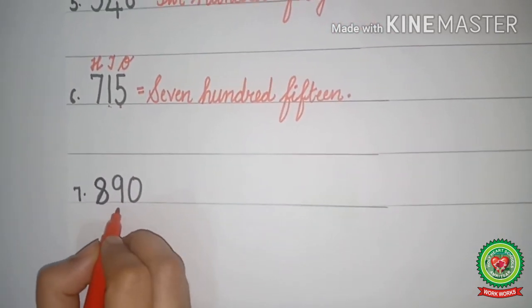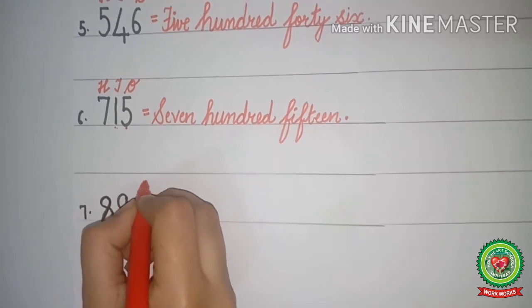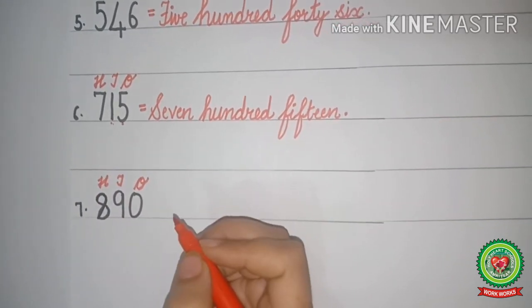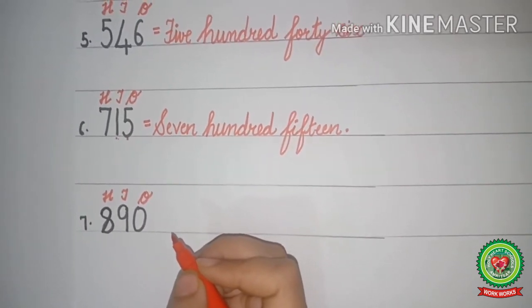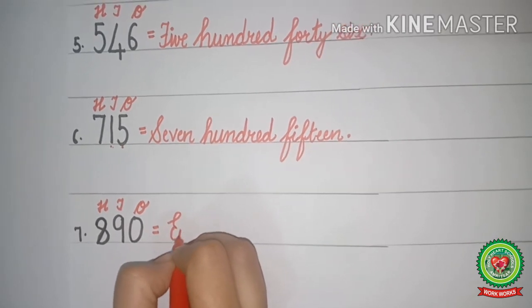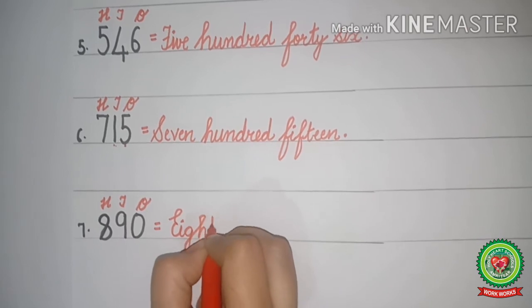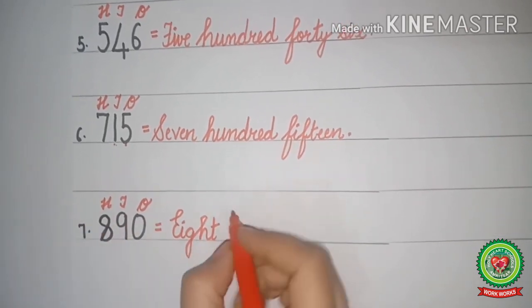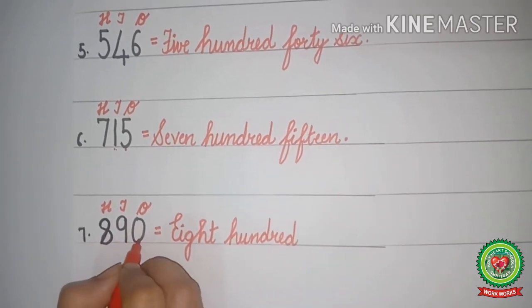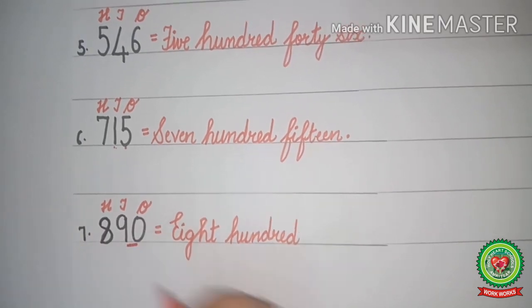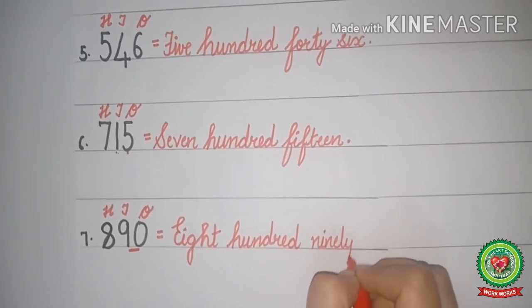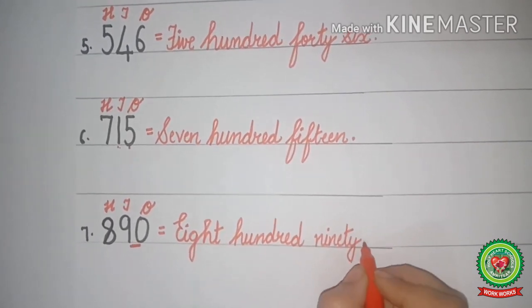Next example is 8, 9, 0. Again we will write down the place value chart first: 1s, 10s, and 100s. Children, always remember: whenever we do writing words or number names, we will write the place value chart first. What comes under 100? 8. Spell 8 with me: E-I-G-H-T. Now 8 with 100 - we write HUNDRED. 9 and 0 together make 90 - spell 90: N-I-N-E-T-Y. So 890 is eight hundred and ninety. Full stop.